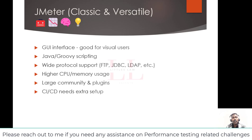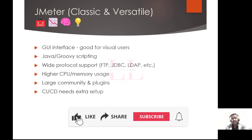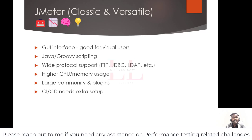The drawback of JMeter's GUI is that it can become clunky and slow with very large or complex test plans, and version control is trickier. When it comes to scripting, JMeter primarily uses Java, Groovy, or BeanShell — Groovy support came in from version 3.0. If you're comfortable with Java or similar languages it's very easy to use, and it has access to the vast ecosystem of Java libraries.